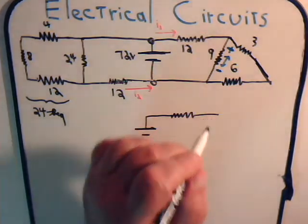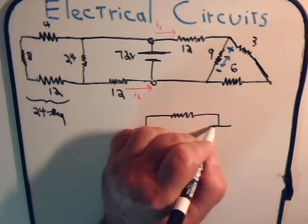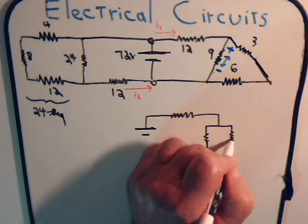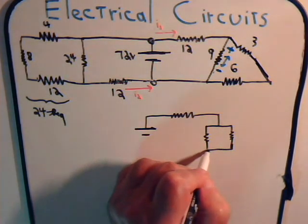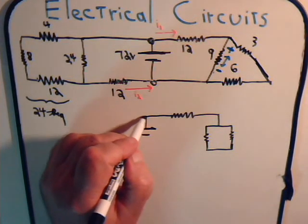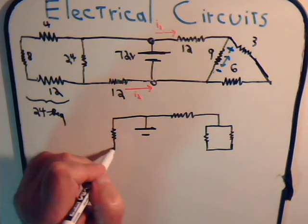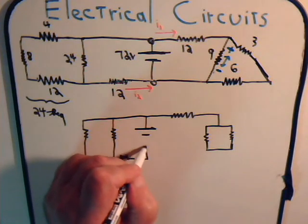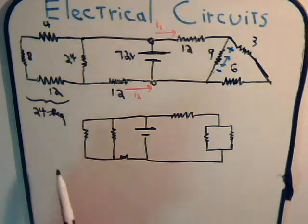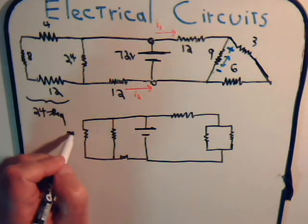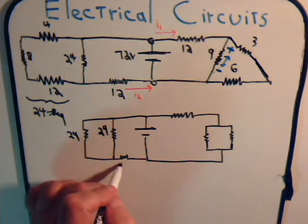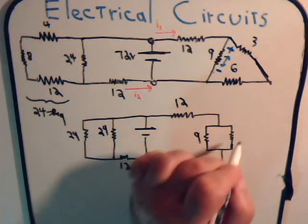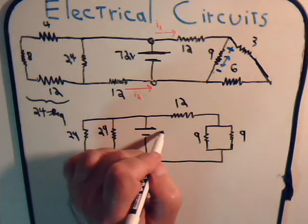Here's the 12 ohm resistor, and then we have a 9 ohm resistor, and the equivalent 9 ohm resistor. These add up to 24 ohms; this is 24 ohms, this is 24 ohms, this is 12 ohms, this is 9 ohms, this is 9 ohms, this is 9 ohms — of course this is just 72 ohms.